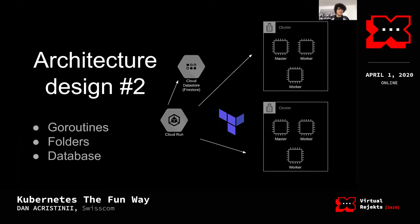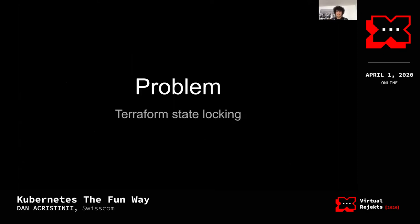Architecture two: what if we use Cloud Run since it actually runs a container and I can write to it? We'd use Datastore in Firestore mode to store some state, use Go routines, and use folders to split our Terraform states — using files as our Terraform backend.